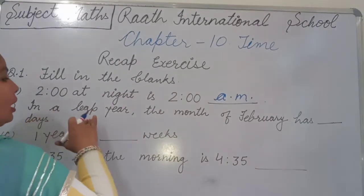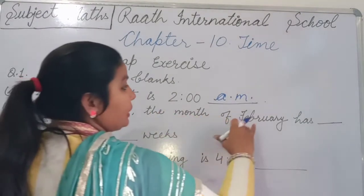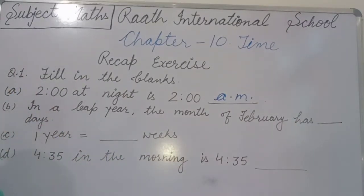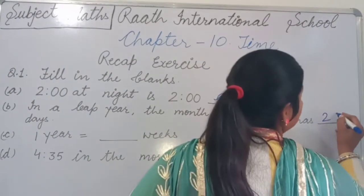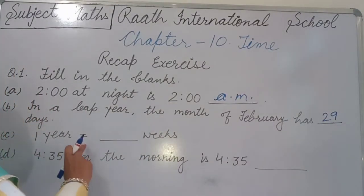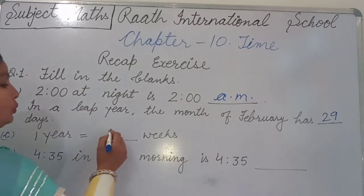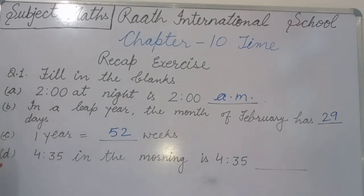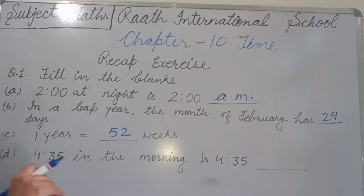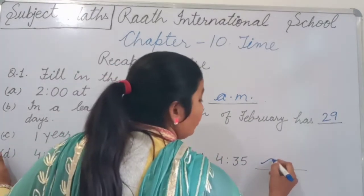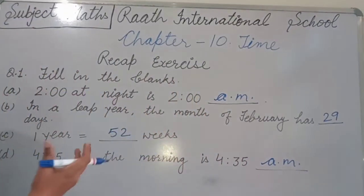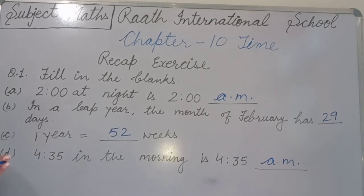Part B: In a leap year, the month of February has 29 days. Part C: One year equals 52 weeks. Part D: 4:35 in the morning is AM, because all times from after 12 midnight up to 12 noon are AM.